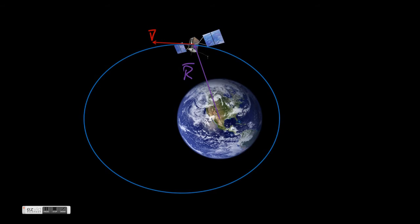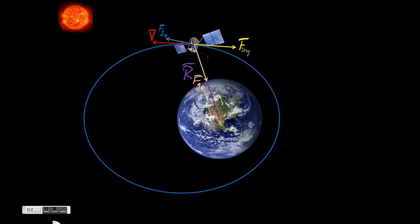Now let's look at the forces acting upon our satellite. First and foremost, we have the gravity of the Earth directed opposite the position vector, called F sub g Earth. Next, because we know there is at least some small amount of atmosphere in space, we have the force of drag acting opposite to our velocity vector. We also know that other large bodies in space exert gravitational pull on our satellites, so we'll include gravity due to the Sun, and we should also include the Moon, and why not Jupiter too.